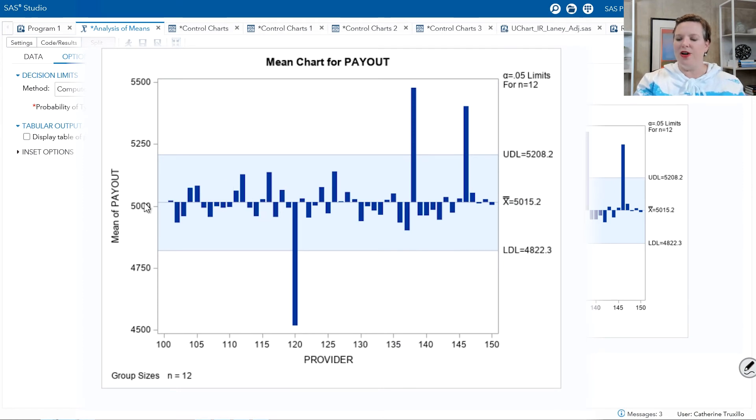There we are. So, there's our mean chart for payout, and you can see that there's one provider, number 120, who's getting way less payout than the grand mean, and here are two providers who are getting significantly more payout than the grand mean. Well, that is a statistically significant difference from the grand mean at an alpha of 0.05, and it does account for how many groups are being compared. So, there is that experiment-wise type 1 error control.